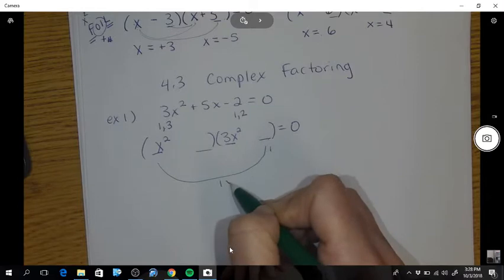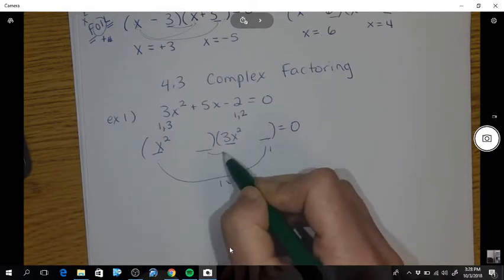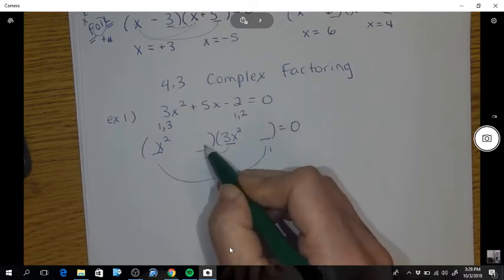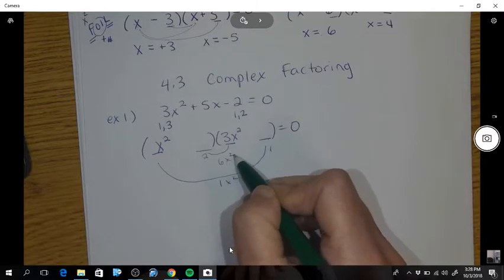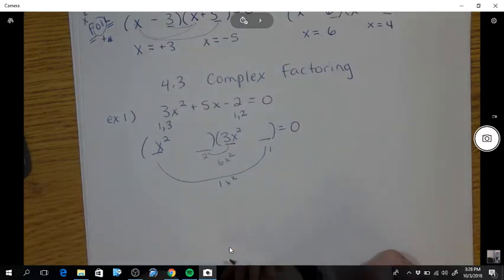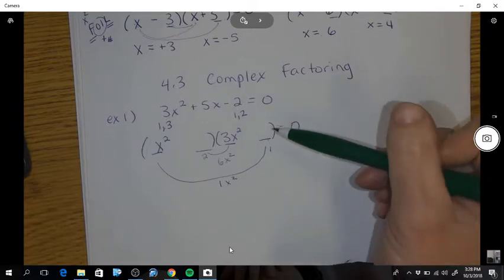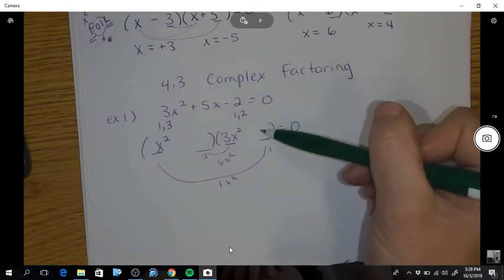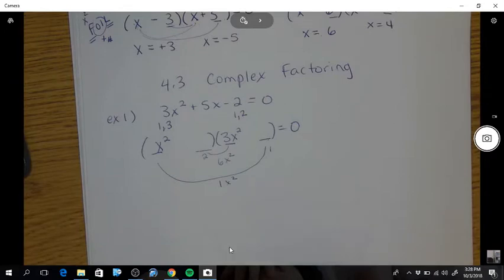And if I put the 2 here, that would be 6x squared. I'm thinking I could get a 5 out of that. If you did the opposite way, if you put the 2 here and the 1 there, that also might work. So let's see what works better.